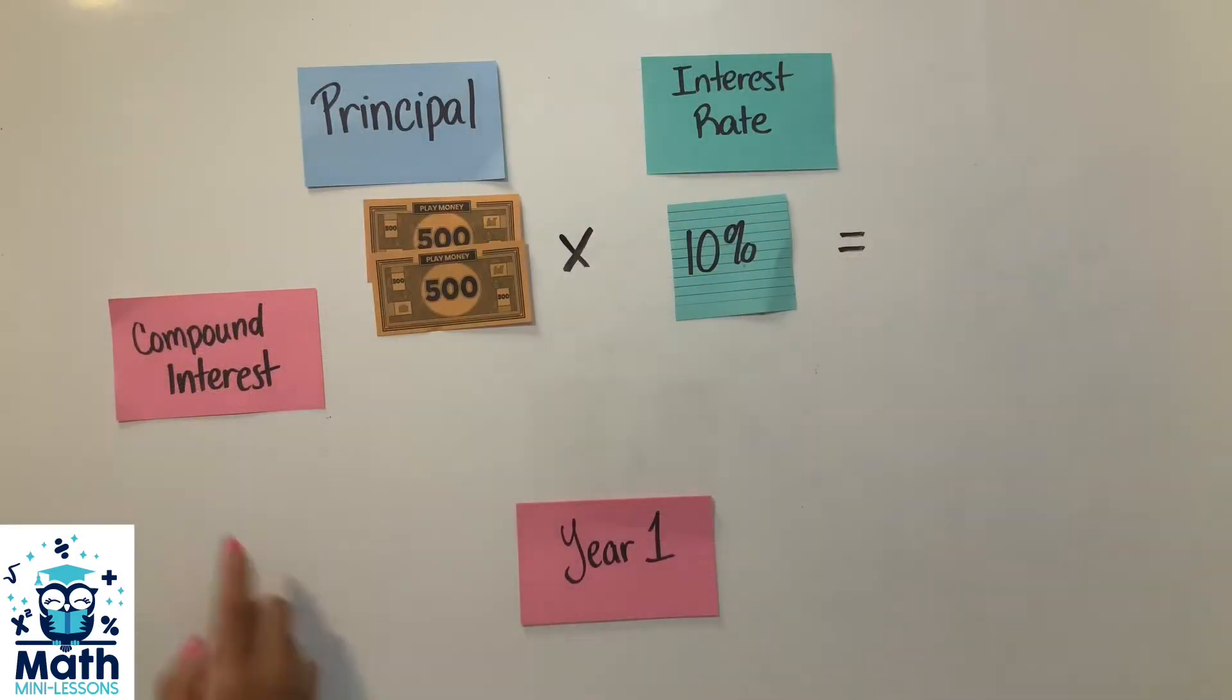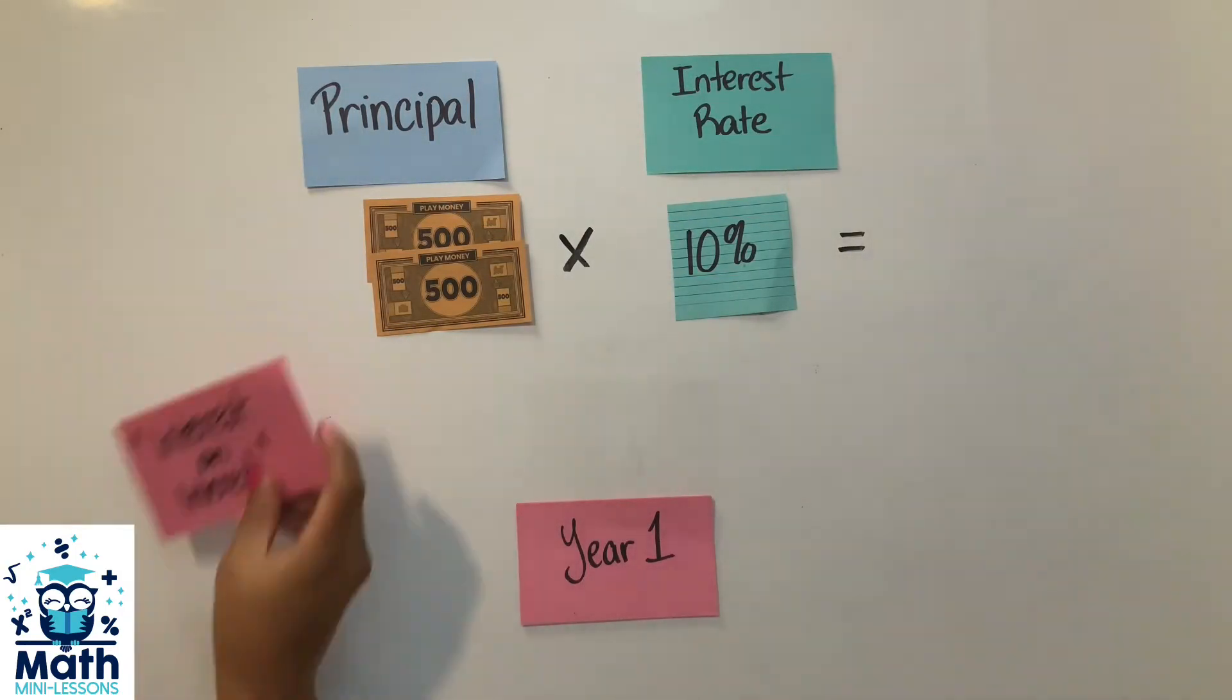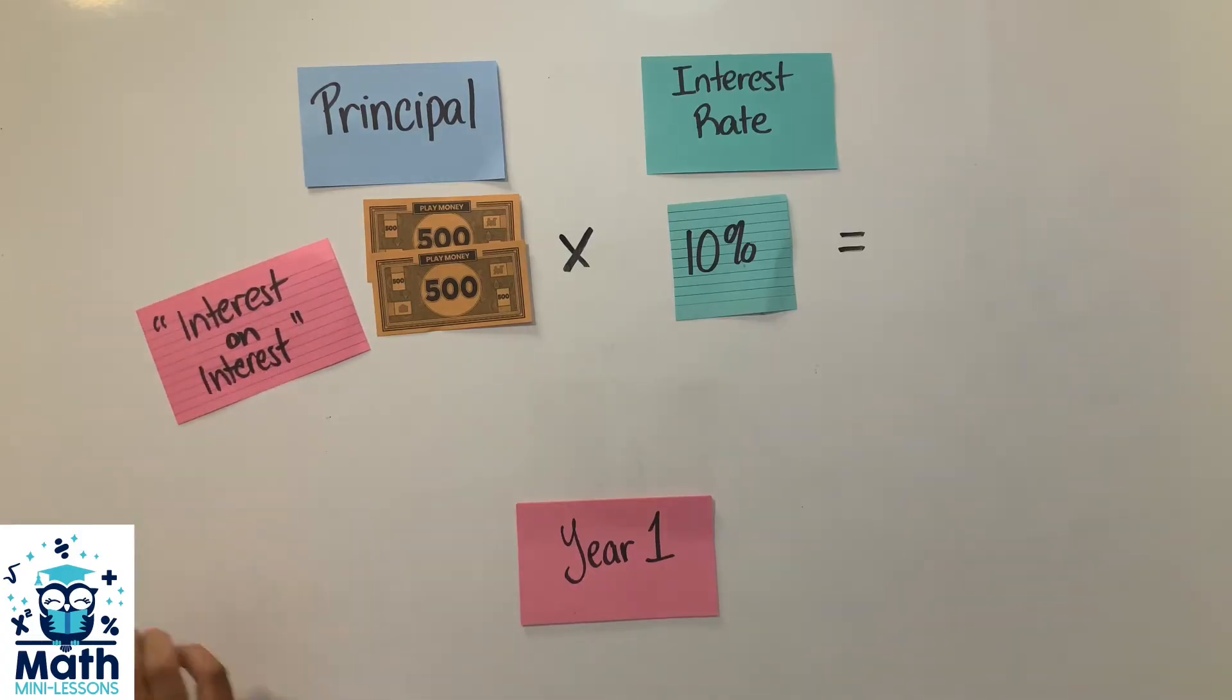Let's compare the same situation with compound interest, which actually builds really fast because I have to do interest on interest, and the power of this happens with time. So remember, with simple interest I was only making $100 every single year consistently.